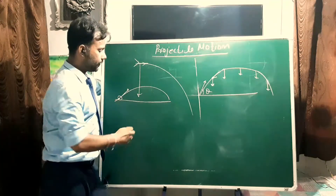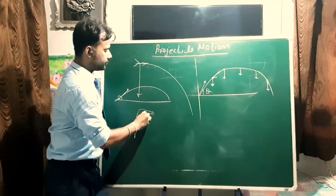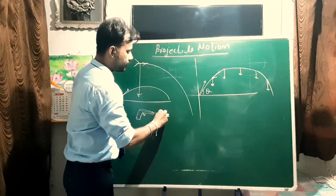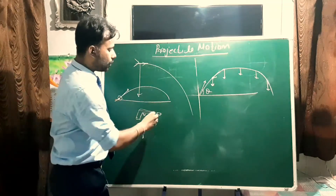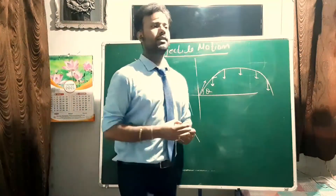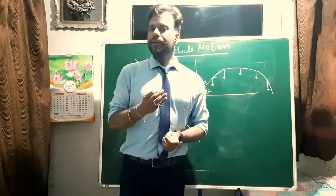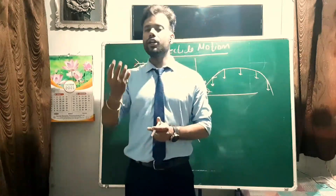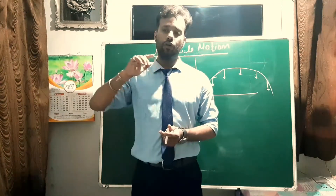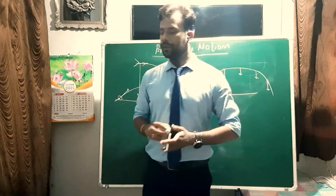Another example: when you fire a bullet from a gun, the bullet also follows a curved projectile path. We might think the bullet moves in a straight line, but as it exits the nozzle, gravity acts downward on it, causing it to curve. So the bullet does not travel in a straight line but follows a curved path.